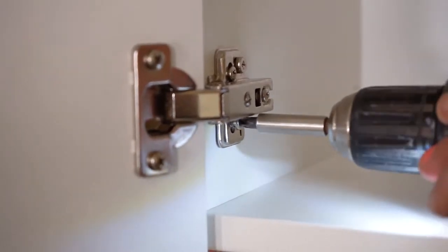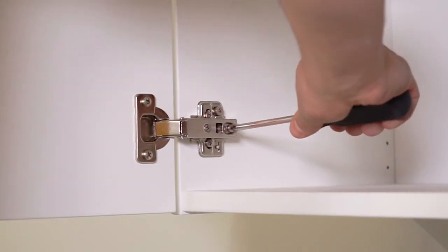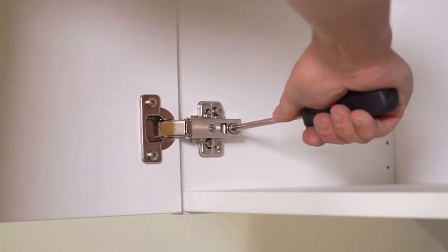Once you've installed all the doors you need to make sure they are aligned. You can adjust them in six different ways using the screws on the hinges.